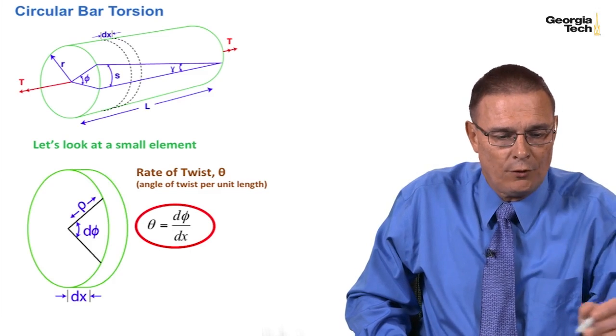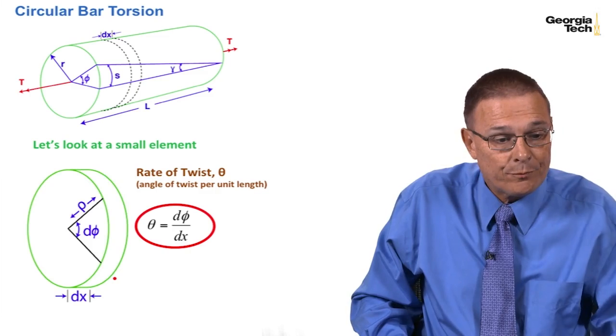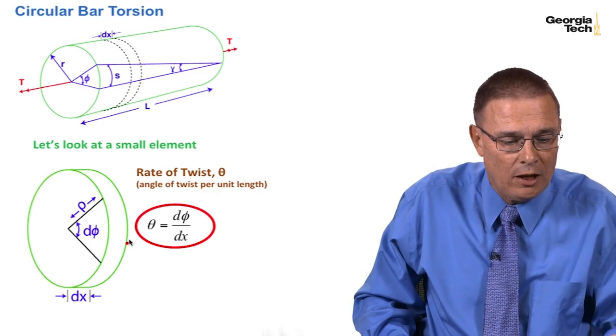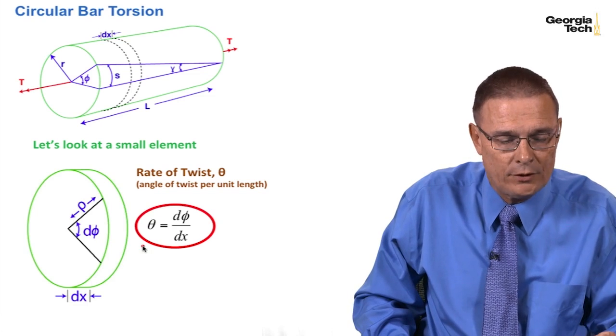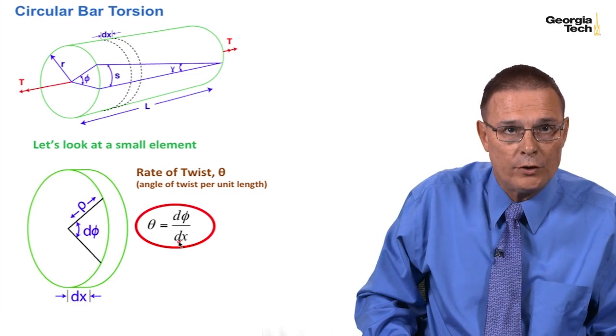And so, this is from Module 10. We took our circular bar torsion, we looked at a small element, we defined the rate of twist as being d phi over dx.